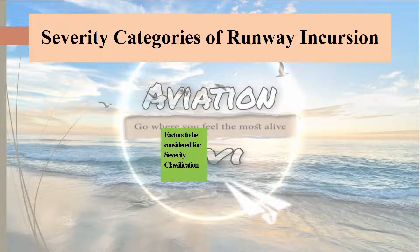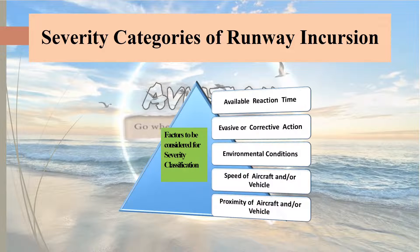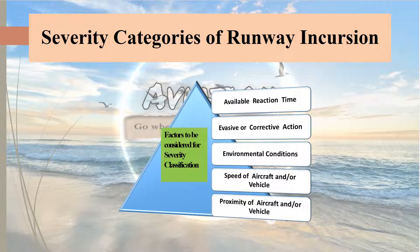Based on the severity of runway incursion, runway incursions are categorized into four categories: A, B, C, and D. Factors considered while categorizing runway incursion by severity include: the available reaction time for either party involved, such as the pilot or vehicle operator; the evasive or corrective action taken to avoid greater impact; the environmental conditions; the speed of the aircraft or vehicle; and the proximity of the aircraft and vehicle involved in the runway incursion.